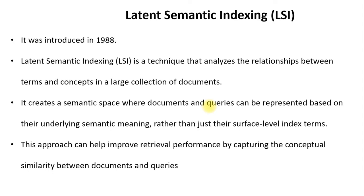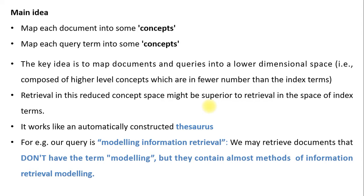Latent Semantic Indexing was introduced in 1988. LSI is a technique that analyzes the relationship between terms and concepts in a large collection of documents. It creates a semantic space where documents and queries can be represented based on their underlying semantic meaning rather than just their surface-level index terms. This approach helps improve retrieval performance by capturing conceptual similarity. The idea is to map documents and queries into a lower-dimensional space composed of higher-level concepts, which are fewer in number than the index terms.